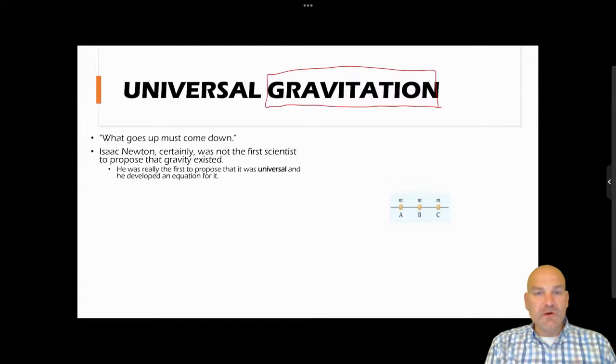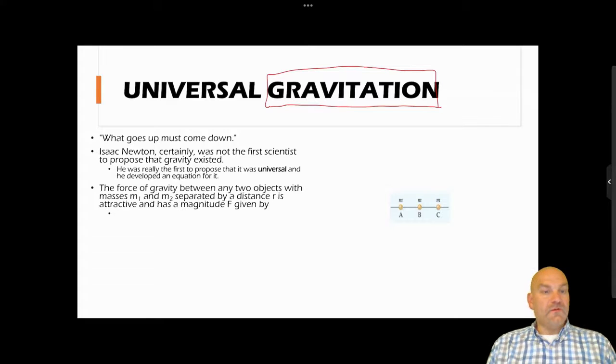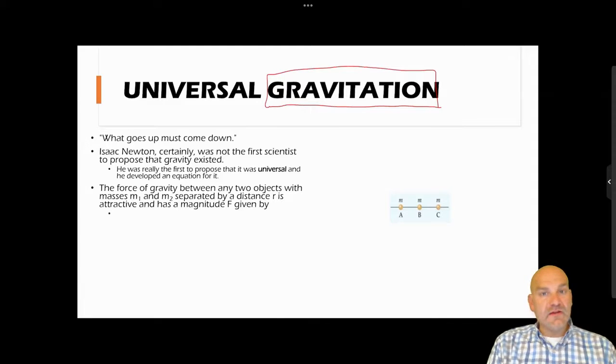Isaac Newton certainly was not the first scientist to propose that gravity existed. What he was really the first person to propose is that gravity was universal, and he developed an equation for it. So the force of gravity between any two objects with masses m1 and m2 separated by distance r is attractive, it's going to pull things together and has a magnitude F given by the equation F equals G m1 m2 over r squared.